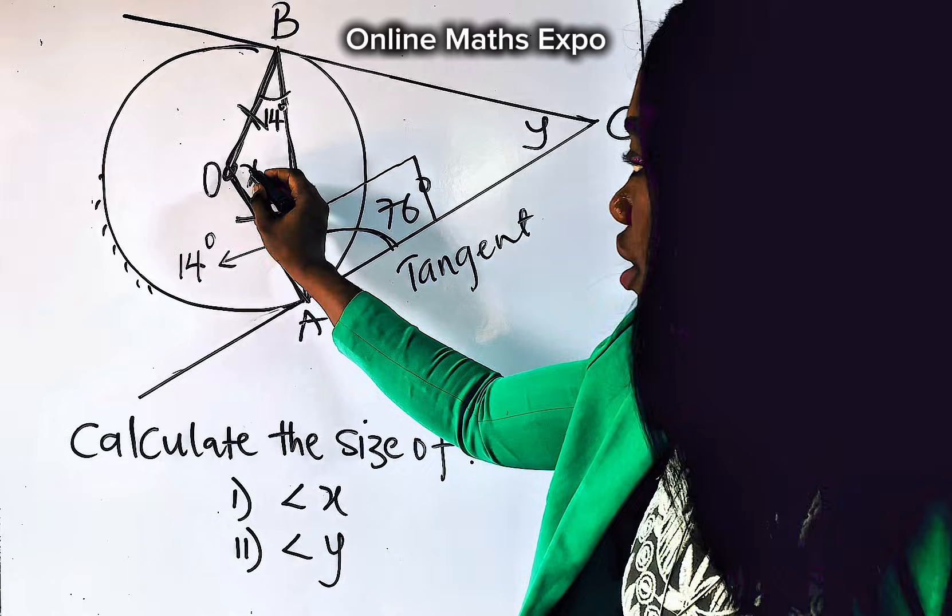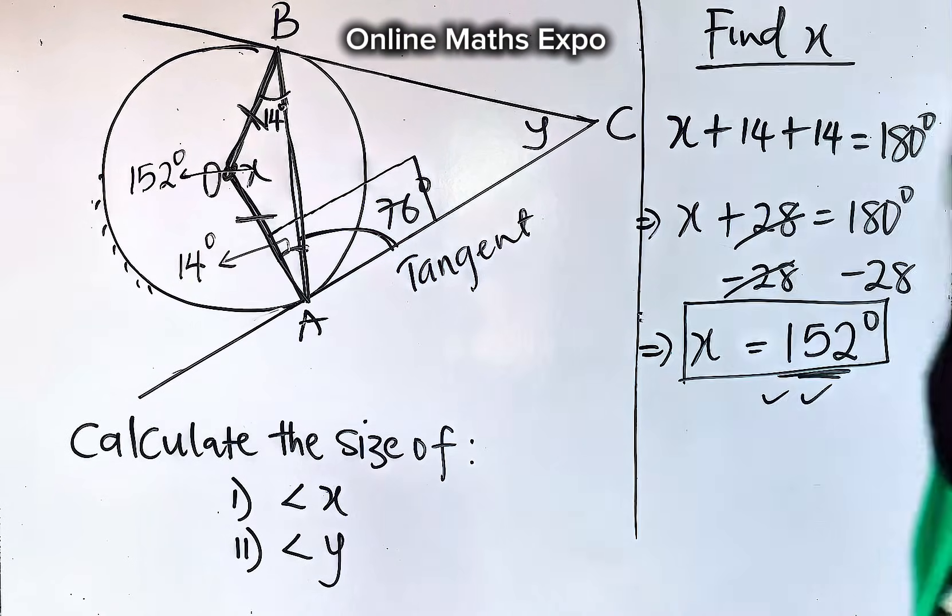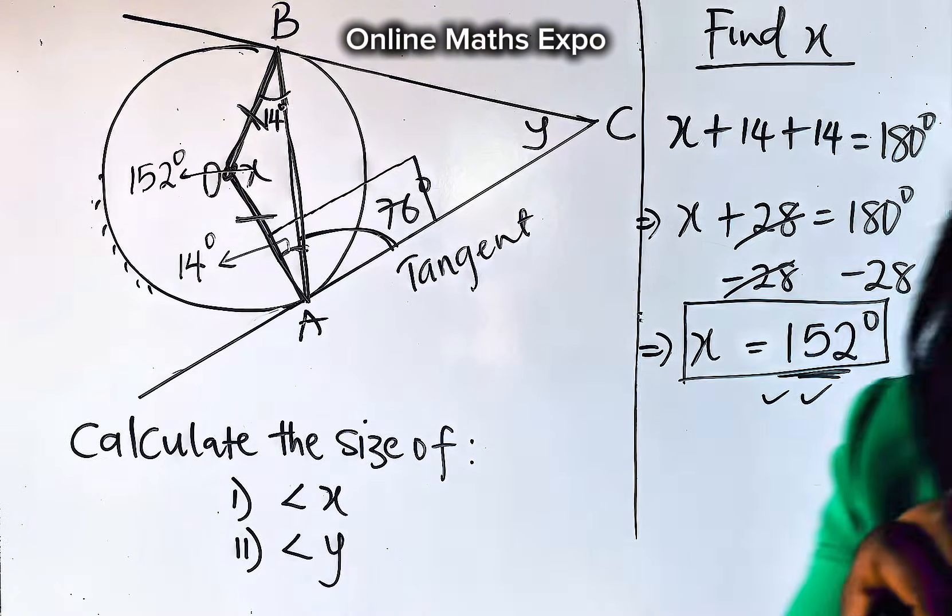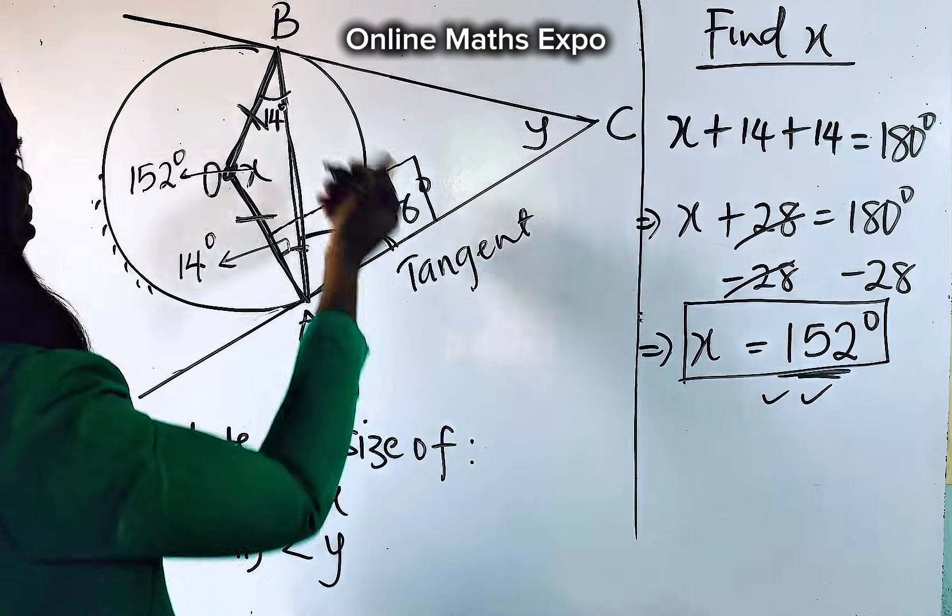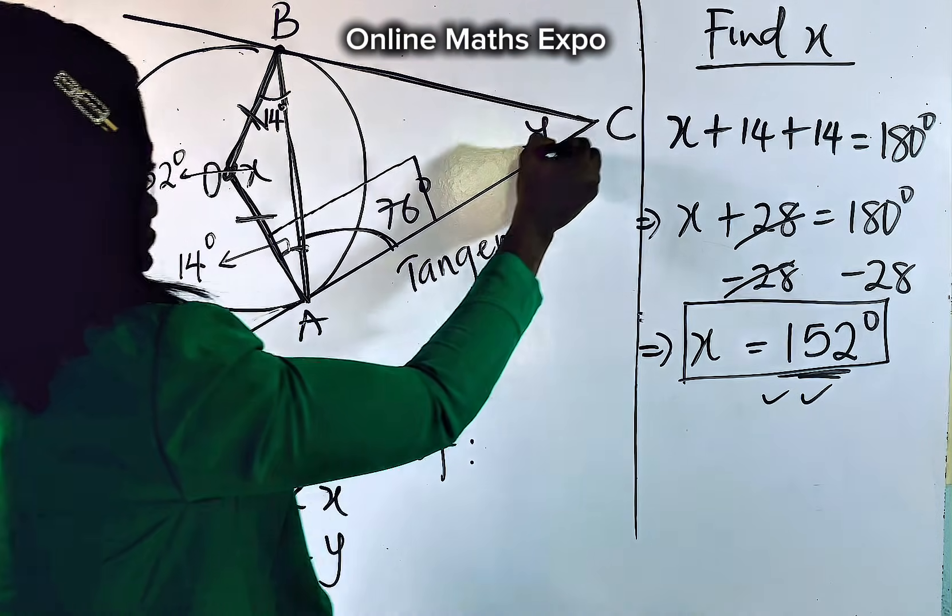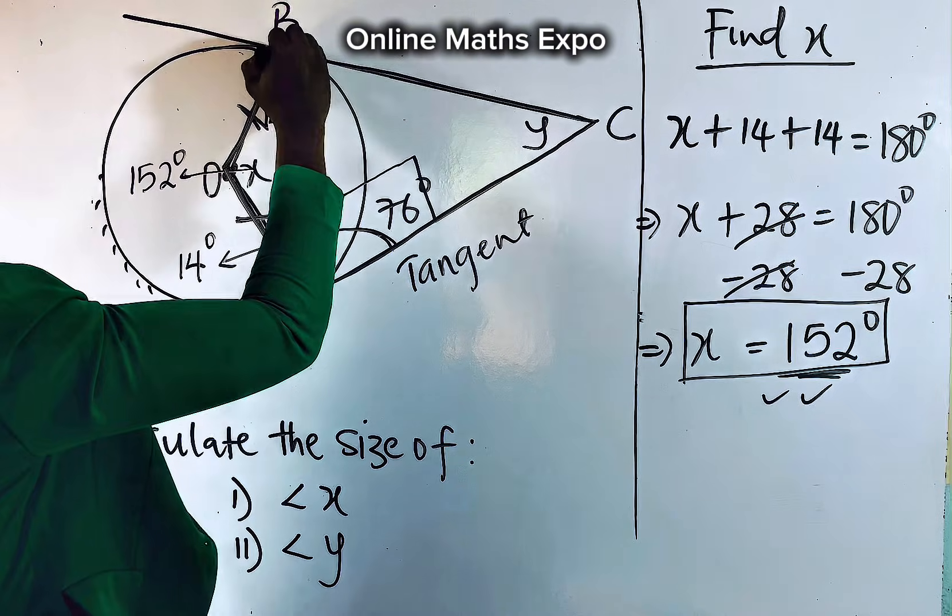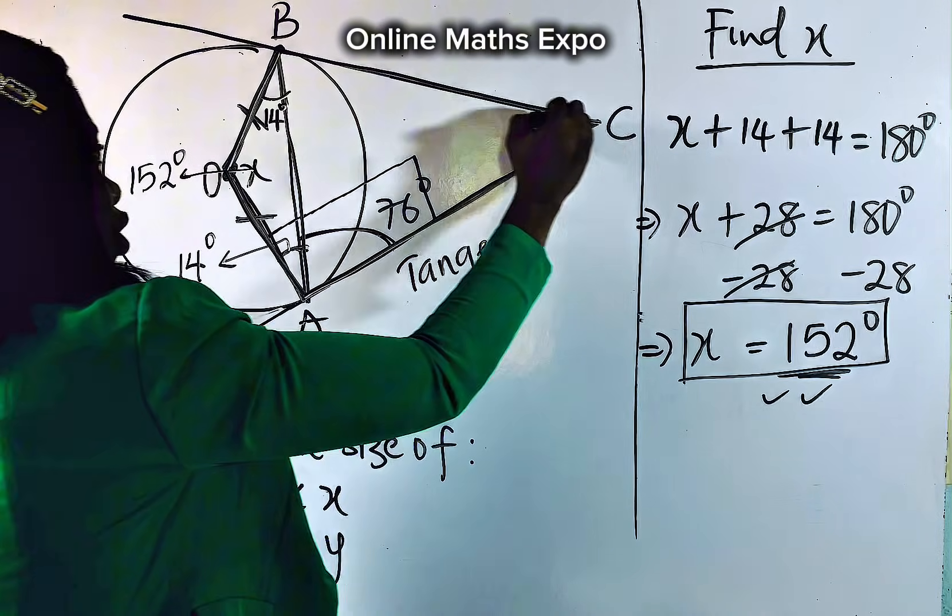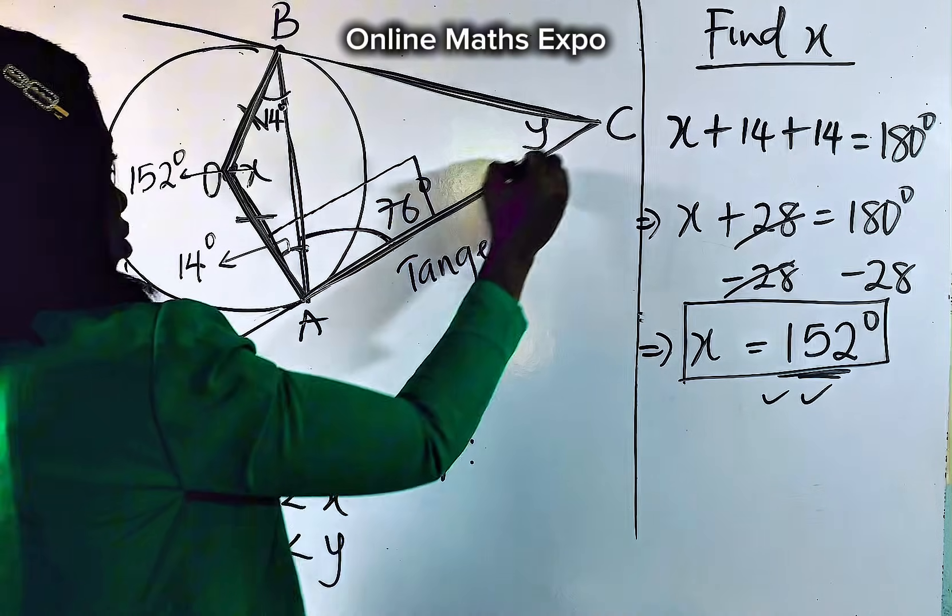Now that you have found this x value as 152 degrees, what do you do to get the value of y? Now, a quick one. Just go back to the diagram. You see that this diagram, watch from here. And what shape are you looking at? We have formed a quadrilateral. And if we bring that shape out, remember, the quadrilateral, the sum of angles of a quadrilateral is always 360 degrees.